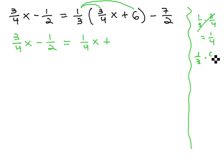Plus 1 third times 6, and if we put the 6 over 1, 3 and 6 reduce to 2, and so we're just left with 2, minus 7 halves.